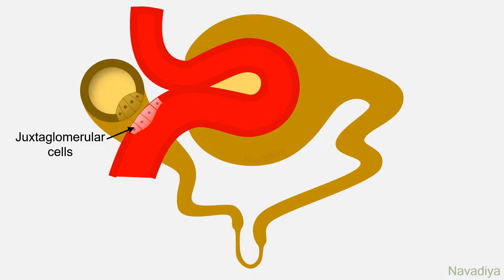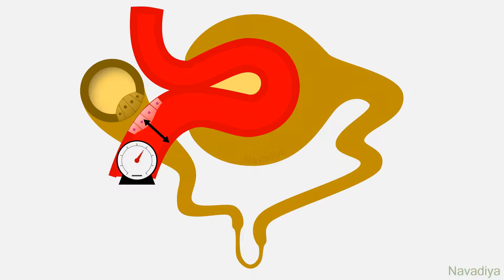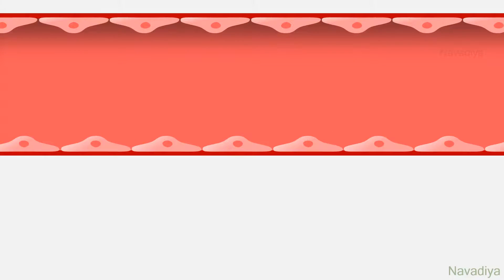The third detector is the juxtaglomerular cells themselves. These cells also have stretch receptors. When there is a fall in blood pressure or volume, there will be reduced stretch on the vessel wall. Juxtaglomerular cells detect this fall and release renin. So after all this detection, we have renin in the circulation.